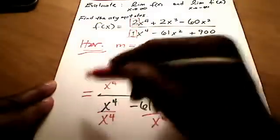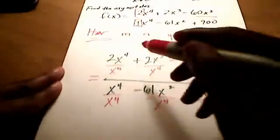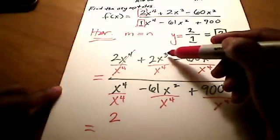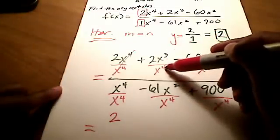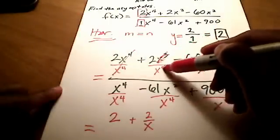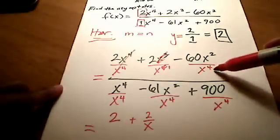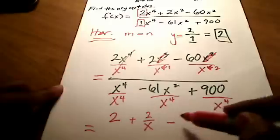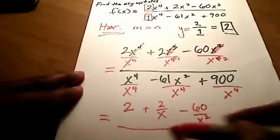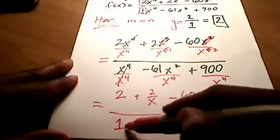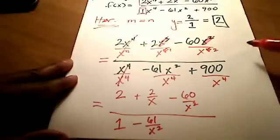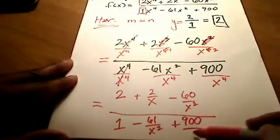Here's what dividing by x to the fourth does: the x to the fourths in the numerator cancel out, leaving just 2. Then x to the third over x to the fourth leaves 2 over x. Two x's cancel leaving x squared on the bottom, giving minus 60 over x squared. For the denominator terms, we get 1 minus 61 over x squared, and 900 over x to the fourth stays as is since nothing cancels.